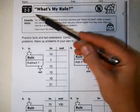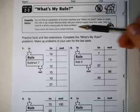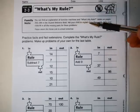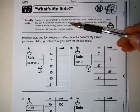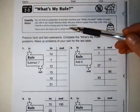Okay guys, so this is today's lesson, 2.3, and it's called What's My Rule? And it says you can find an explanation of function machines and What's My Rule tables on pages 202 to 204 in the student reference book. Okay, the student reference book's not going home, so I'm going to explain right now about this.